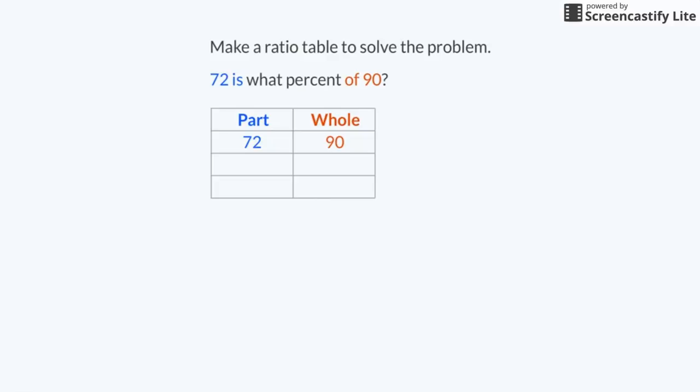Both 72 and 90 have 9 as a common factor. I can reduce 72 and 90 by dividing both numbers by 9. This gives me 8 as the part and 10 as the whole.